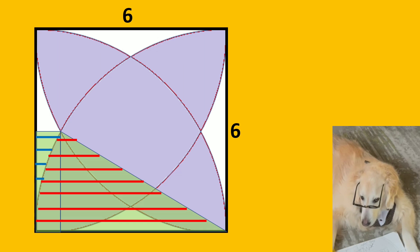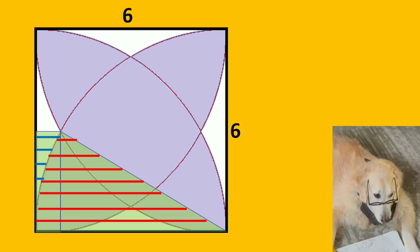So if we find the area of one of them, then we can find all the white areas. Then we can find shaded area by subtracting the white areas from the square.